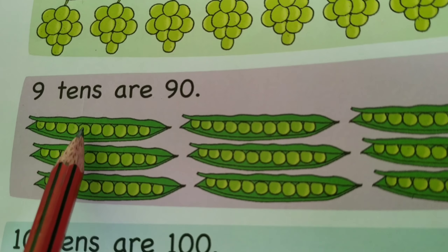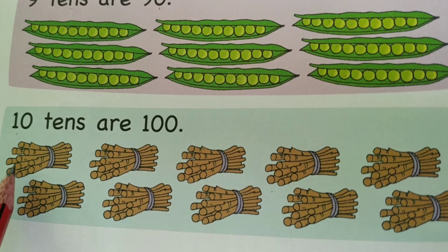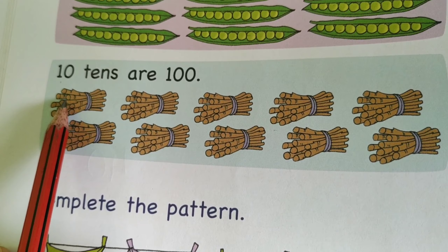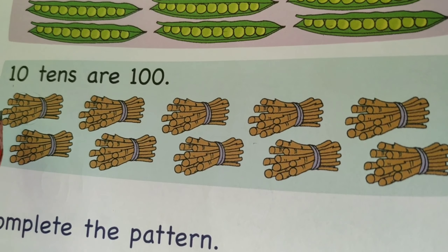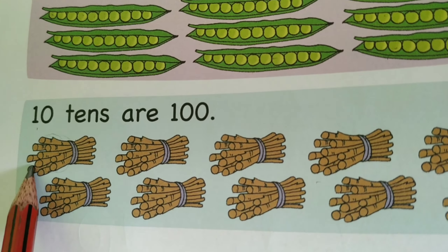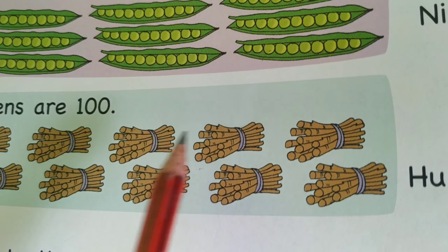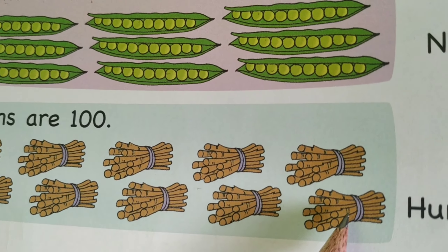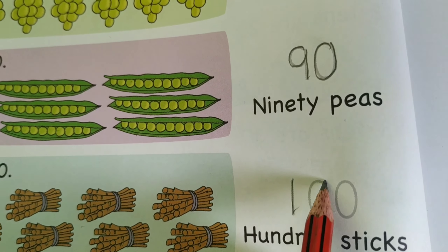There are bundles of sticks. Each bundle has ten sticks. Let's count the groups: one ten, two ten, three ten, four ten, five ten, six ten, seven ten, eight ten, nine ten, ten ten. Ten tens are hundred. How many sticks? Trace: hundred sticks.